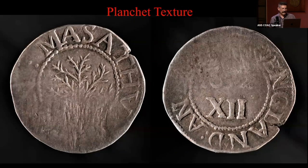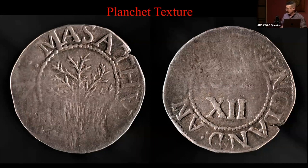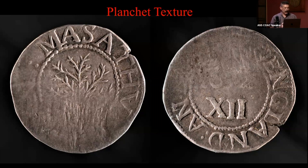This is a planchet texture. This is a coin that I think came out of a VF30 holder, and it was in Kralovich's inventory, and I couldn't wait to buy it. Who in this room would buy this coin as a VF oak tree shelling and be happy with it?